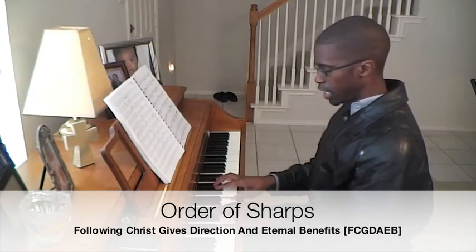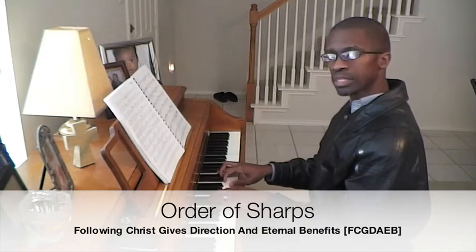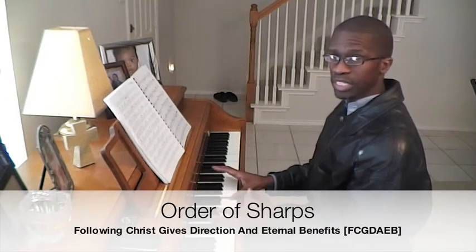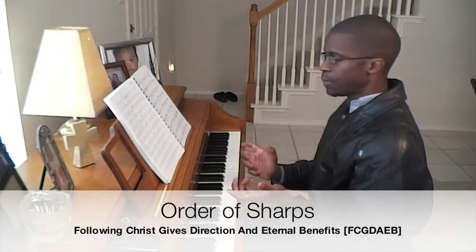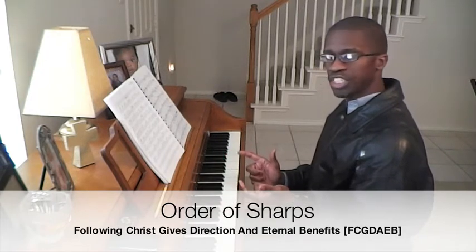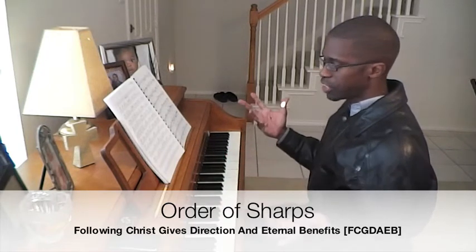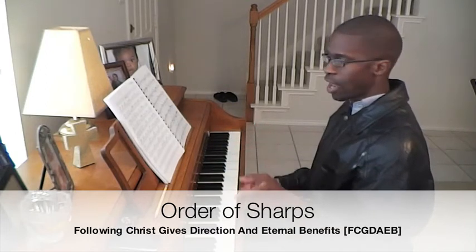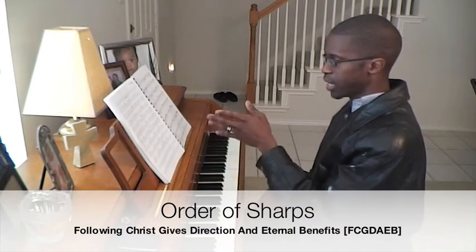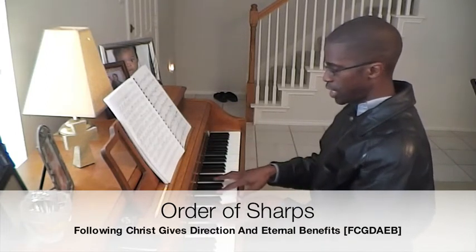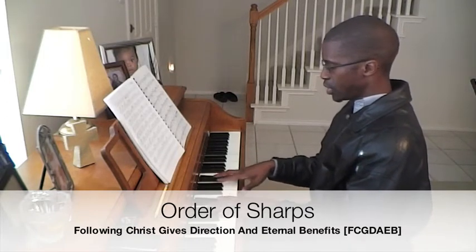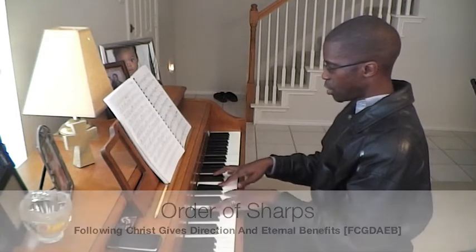Play the scale on E — four sharps in the scale. When I get to the key of C sharp, there are seven sharps in the scale, so every note in the scale is going to be sharp: Following Christ Gives Direction And Eternal Benefits — F sharp, C sharp, G sharp, D sharp, A sharp, E sharp, and B sharp. Every note is sharp on that scale.